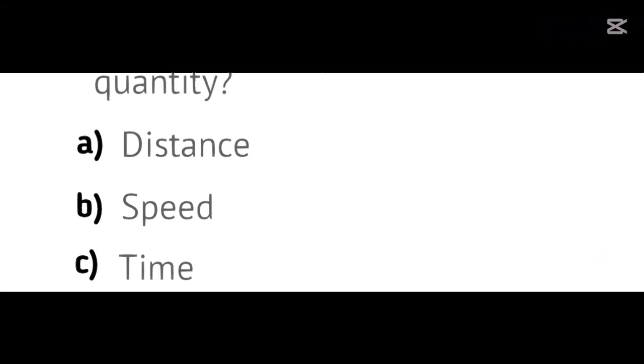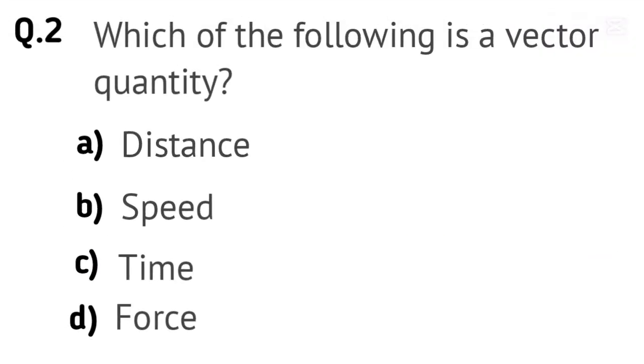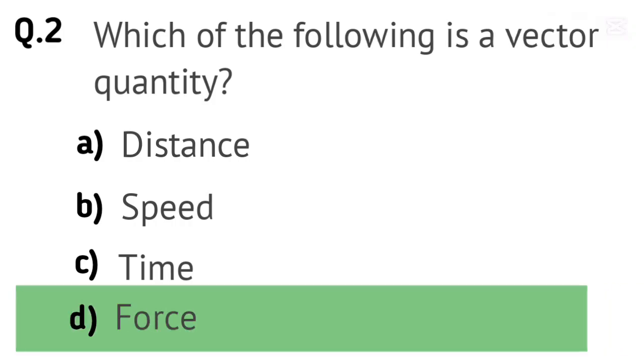Question 2. Which of the following is a vector quantity? Options: A. Distance. B. Speed. C. Time. D. Force. Right answer is D. Force.